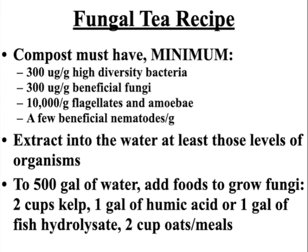Here's a typical fungal recipe: 500 gallons of water, two cups of kelp, one gallon of humic acid, or one gallon of fish hydrolysate — right there that's close to the maximum, and we're going to be growing a lot of fungi with that. If you're concerned your compost tea is going to go anaerobic, reduce this by half — be safe, not sorry. A question about molasses: don't use molasses. Why? What does molasses grow really well? Bacteria. If you are going to use molasses, make sure it's non-sulfured.